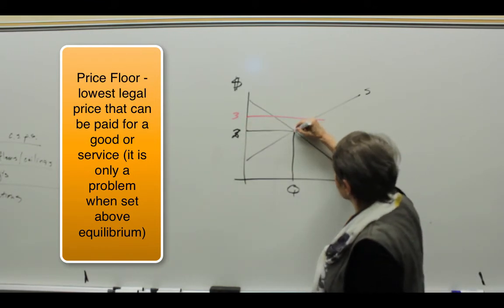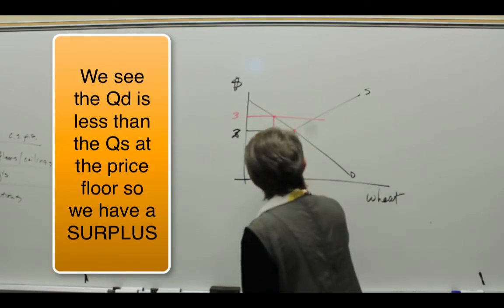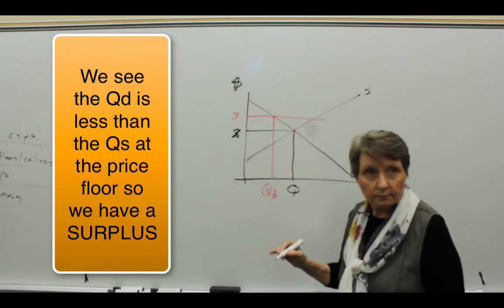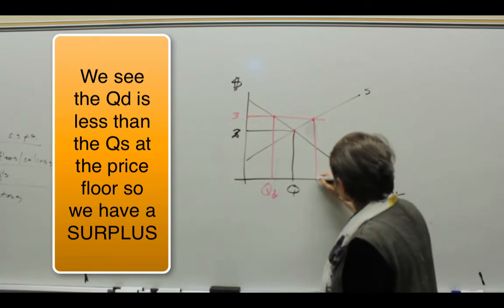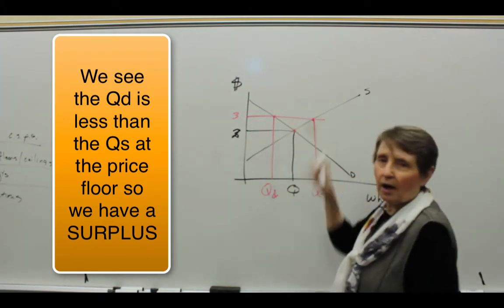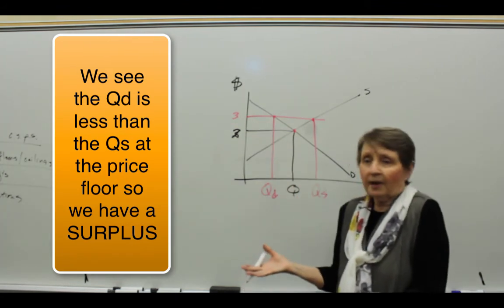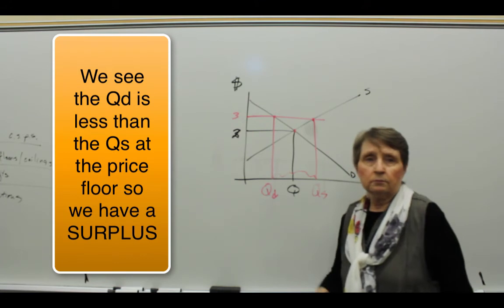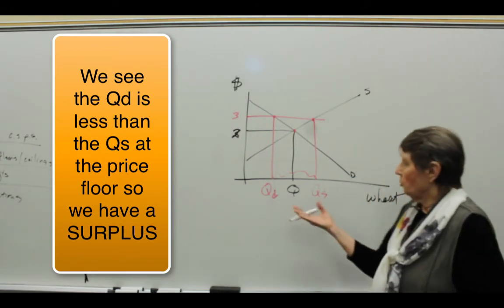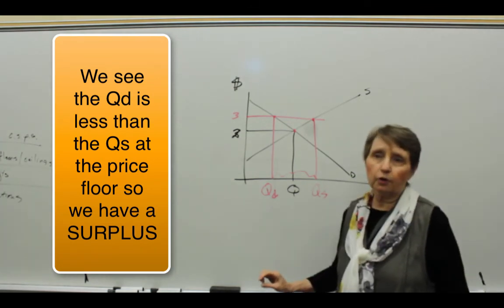Well, law of supply, law of demand. As price increases, ceteris paribus, what does quantity demanded do? It decreases. So here's the quantity demanded at this new price floor, and here's the quantity supplied. That doesn't surprise us. At higher prices, producers are willing to supply more. At higher prices, consumers are willing to buy less. So we're left with a surplus of wheat. And you might say, 'Well, we don't have a surplus of wheat. We have people who are hungry in America.' We have a surplus of wheat.